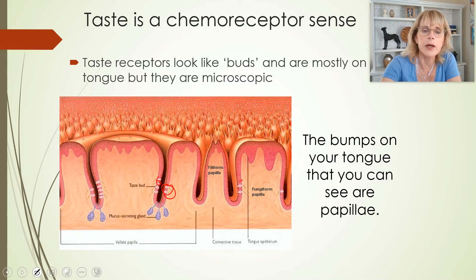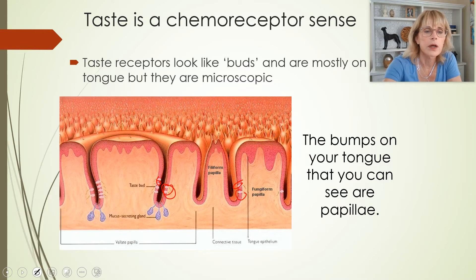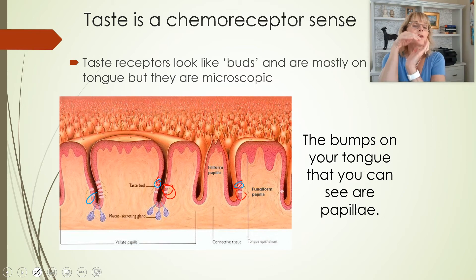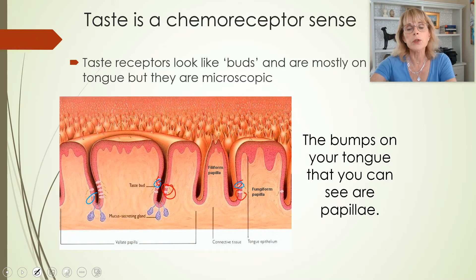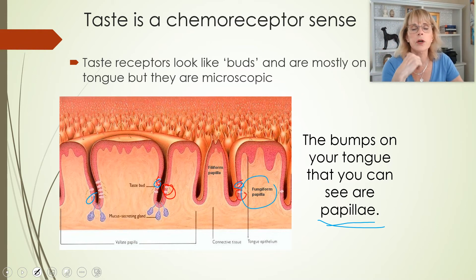Taste bud cells, when you look at them through the microscope, look like little flower buds that are ready to open. The bumps you see on the back of your tongue are technically not taste buds — those are technically papillae. You've got different kinds of papillae on your tongue; the ones most obvious on the back are the fungiform ones.